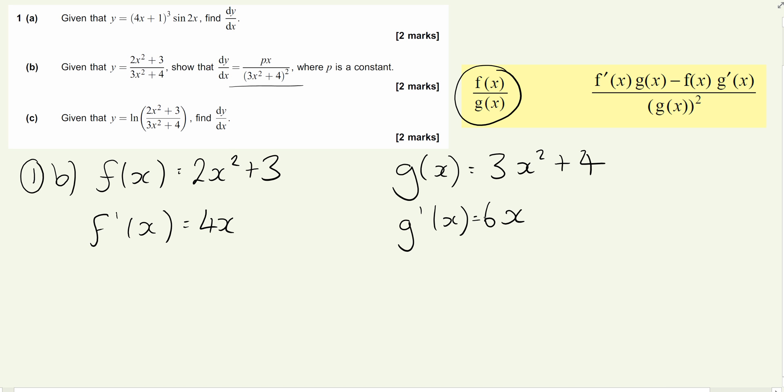It's just a case of substituting into this formula, and this formula takes a little bit more care. The order must be right. We're doing f'(x) times g(x), so 4x(3x² + 4), subtract f(x) times g'(x). I'm going to change the order to get the smaller number on the outside, so 6x(2x² + 3), and all of that is divided by g(x)², so (3x² + 4)².